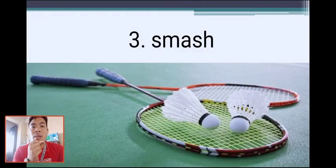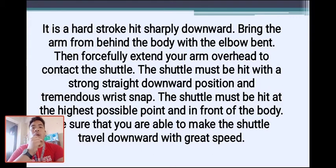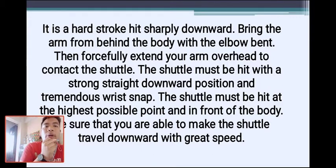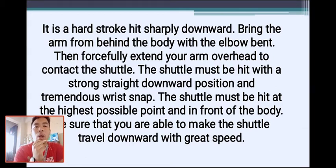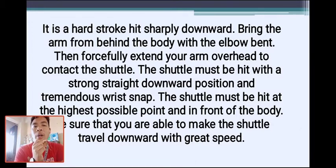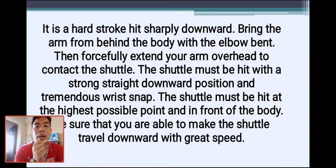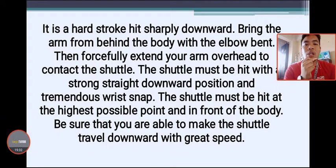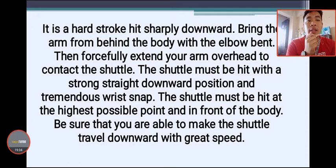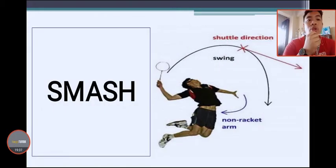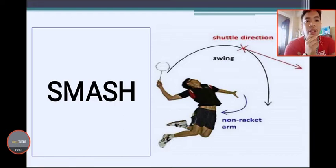Some players do a slow drop as a fake — pretending to hit hard but actually hitting softly. You must be attentive in playing badminton and align your way of hitting or receiving the shuttlecock with your game strategy. Next is the smash: a hard stroke hit sharply downward. Bring the arm from behind the body with the elbow bent, then forcefully extend your arm overhead to contact the shuttle.